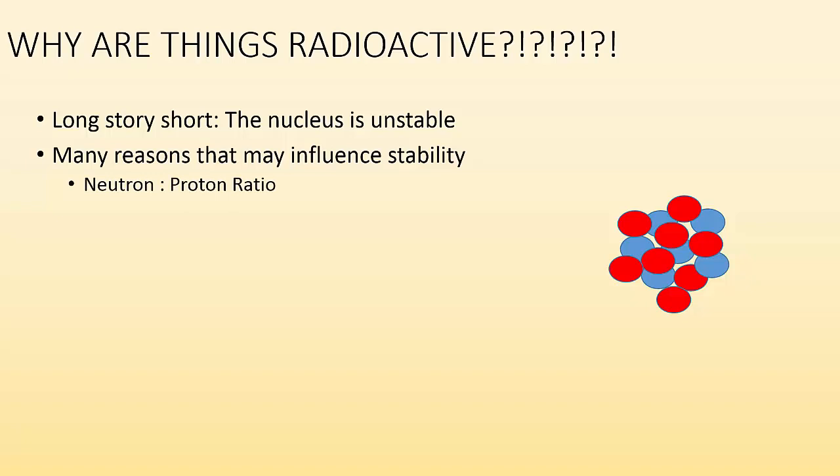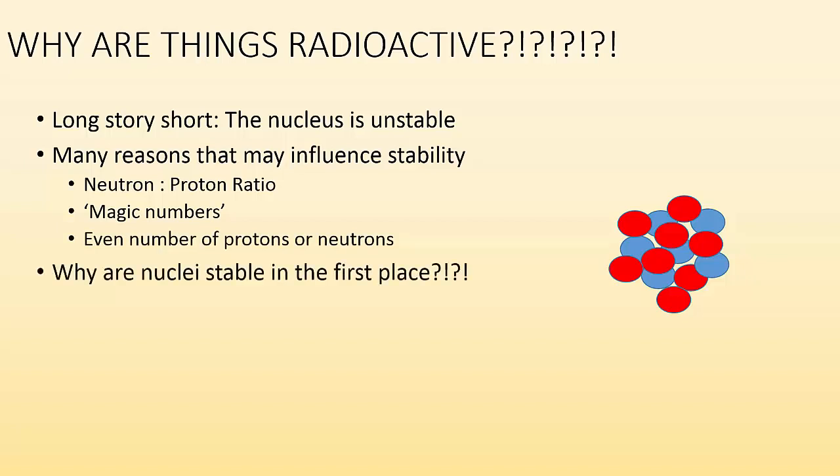One is the neutron to proton ratio, the existence of magic numbers, even number of protons or neutrons, and those are going to be things that we look at in more detail. But first off, why are nuclei stable in the first place?